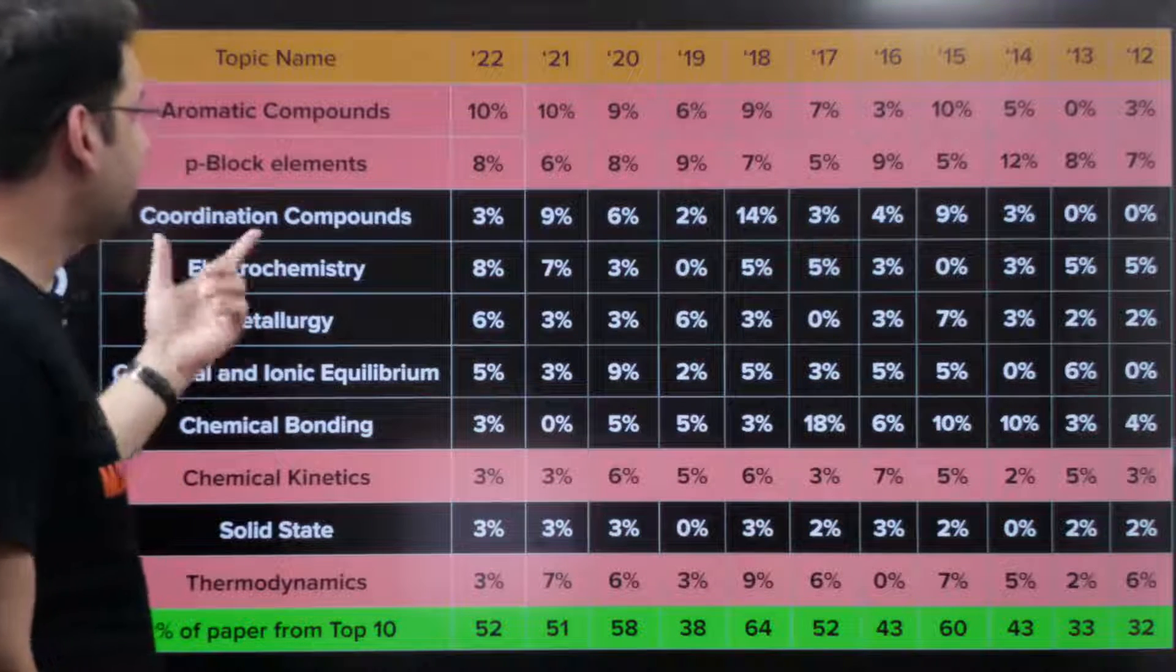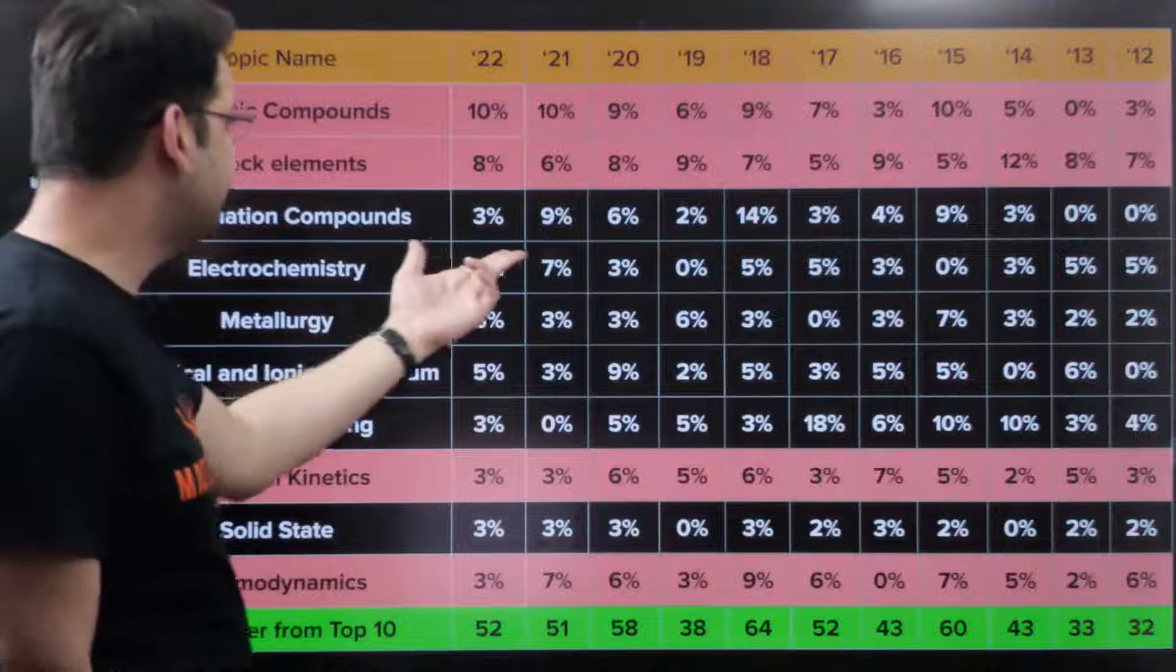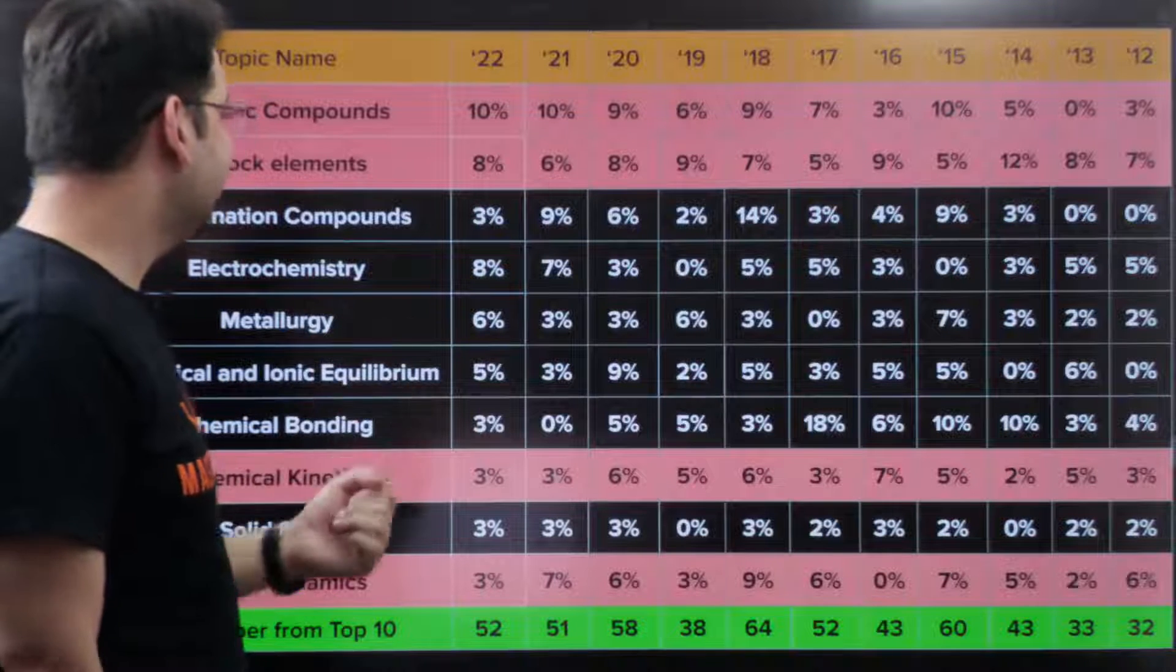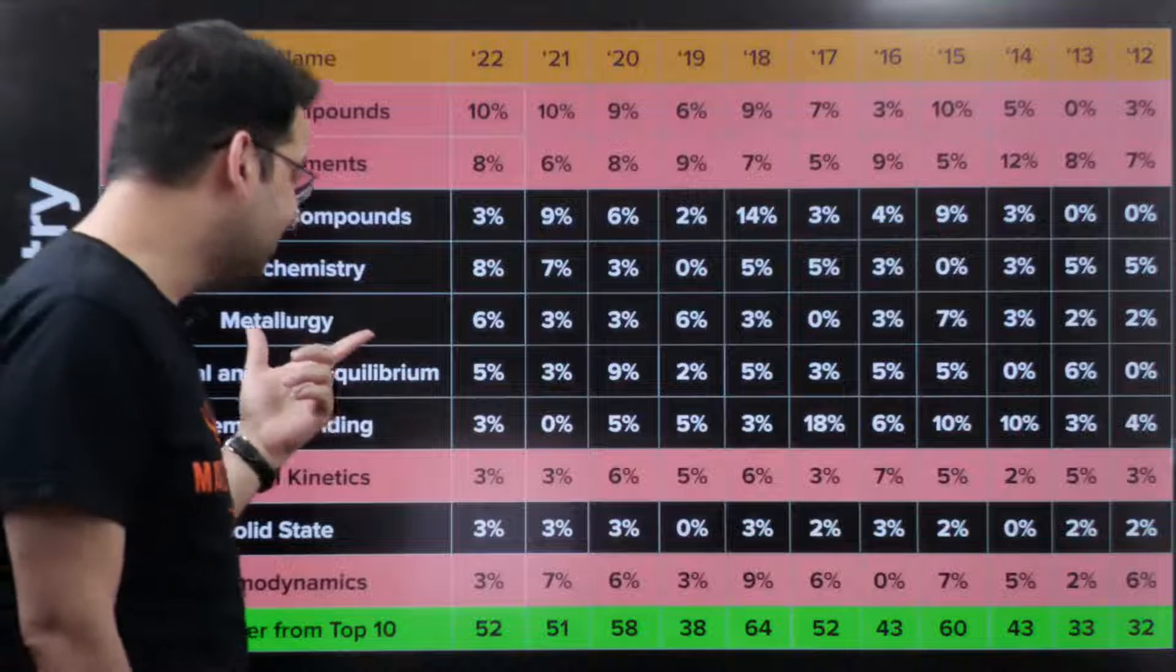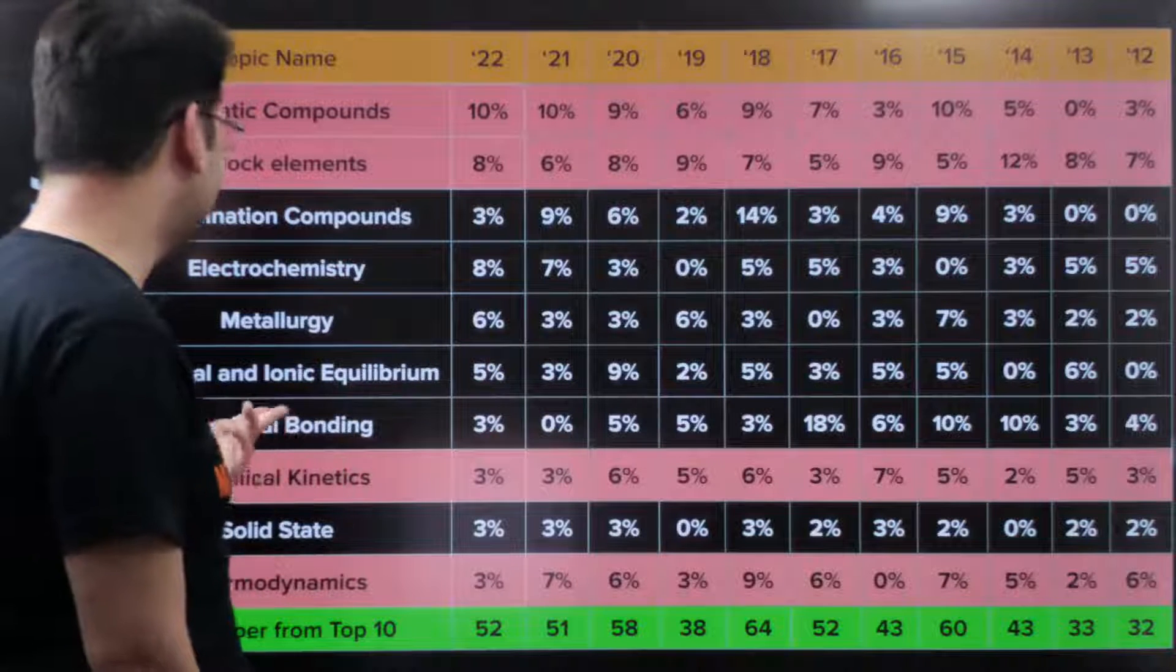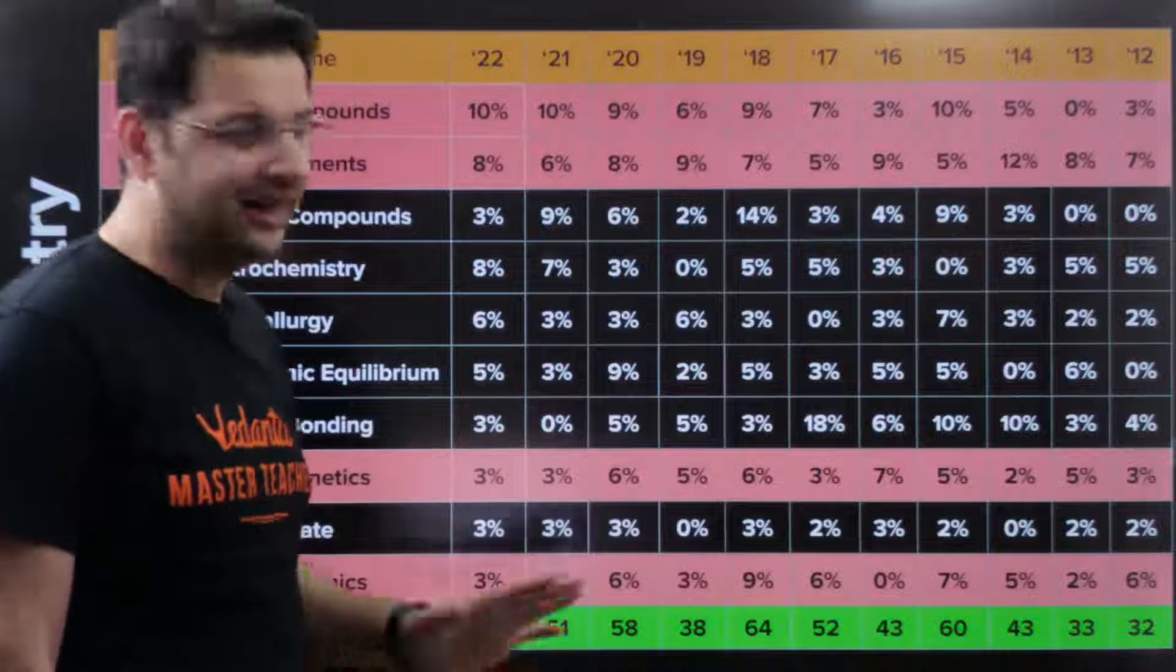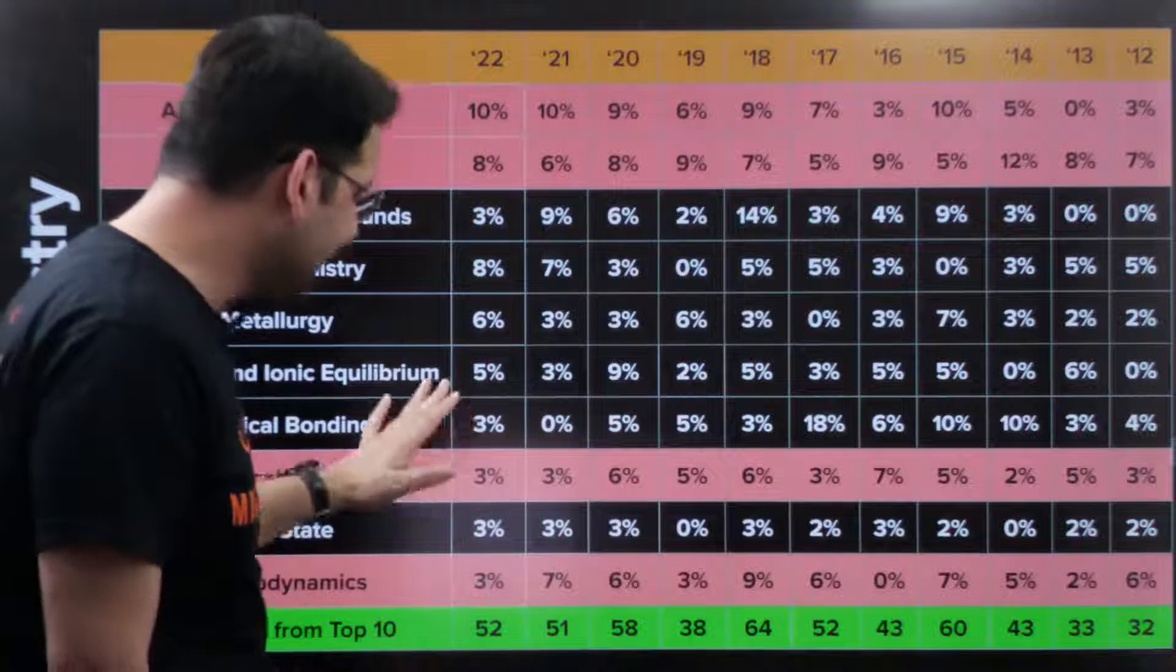I mean, this is very random. Electrochemistry is 7 to 8% every year almost. Metallurgy, 3, 3, 6, 6. Chemical equilibrium, this is one important unit which I still remember. Chemical and ionic equilibrium. 5%, 3%, 9%. Chemical bonding is 3%. So this is more or less evenly spread.